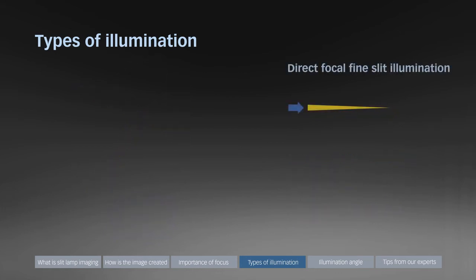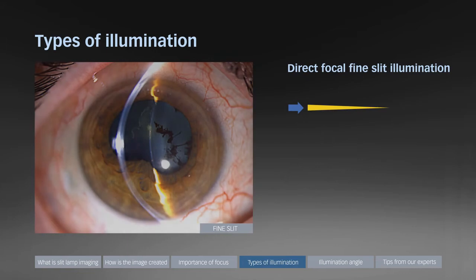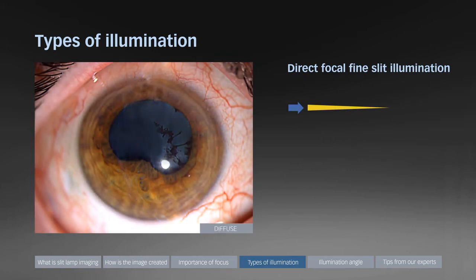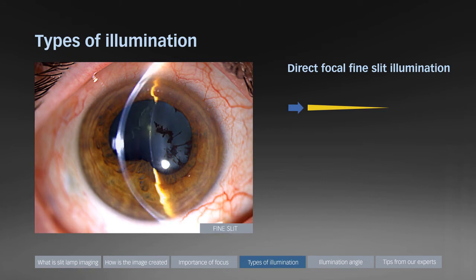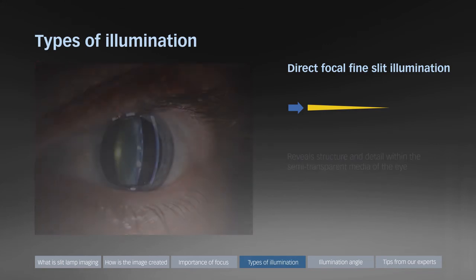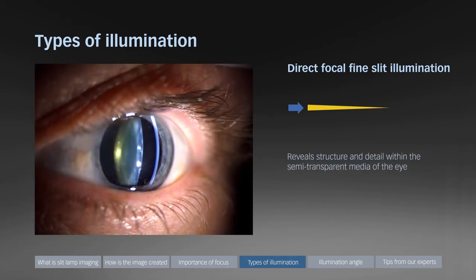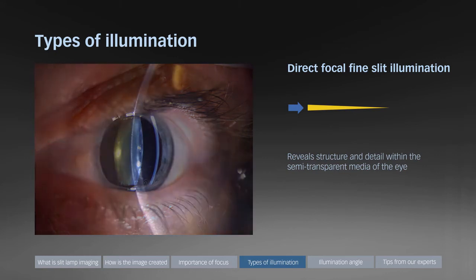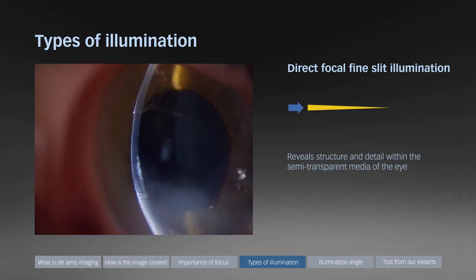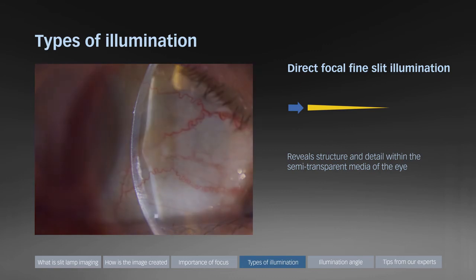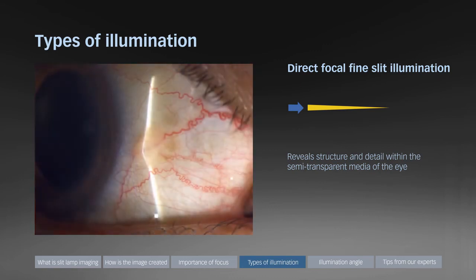Direct focal fine slit illumination delivers a narrow high intensity slit beam. For comparison, the same eye with diffuse illumination only and here again with direct focal fine slit illumination. Fine slit illumination can be used to reveal structure in detail within the semi-transparent media of the eye. It also assists with locating the level where pathological changes occur and finally allows visualization of topography.